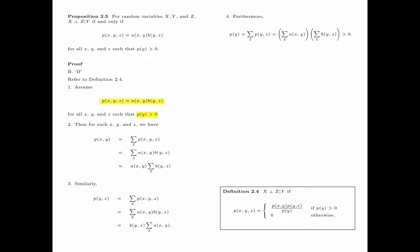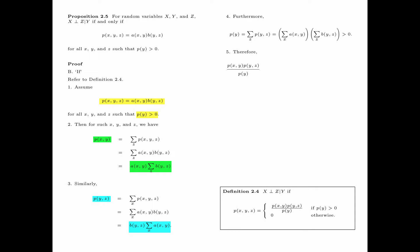By our assumption p(y) is bigger than 0, which implies that p(y) equals summation over x of a(x,y) times summation over z of b(y,z). Here we use the expression for p(y,z) that we have just obtained, as highlighted in blue. With this expression and summing over all z, we obtain the summation over x of a(x,y) times the summation over z of b(y,z). Since p(y) is bigger than 0, neither of these summations equals 0. Now consider the fraction p(x,y) times p(y,z) divided by p(y). We are going to use the expressions obtained for p(x,y), for p(y,z), and for p(y).